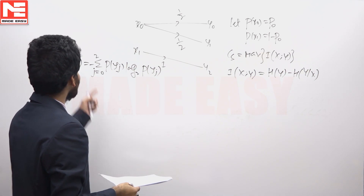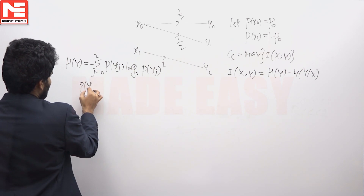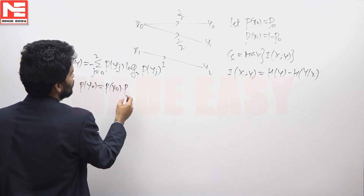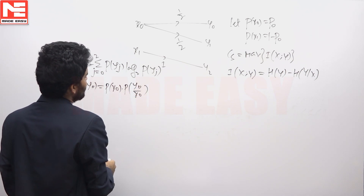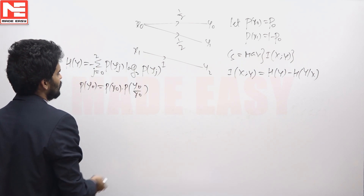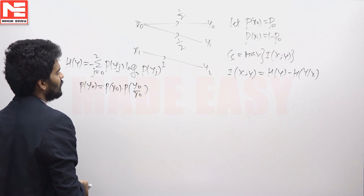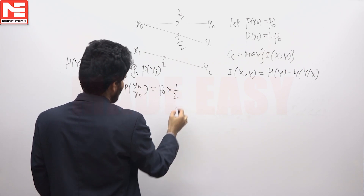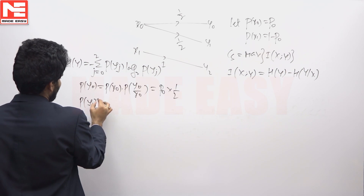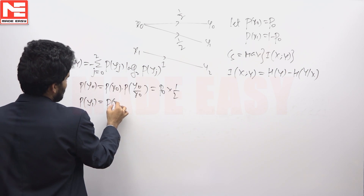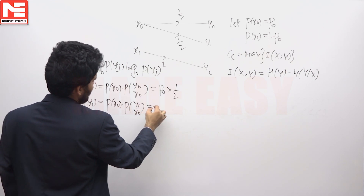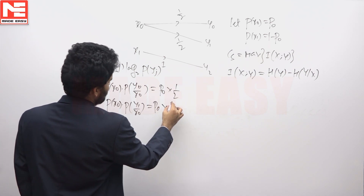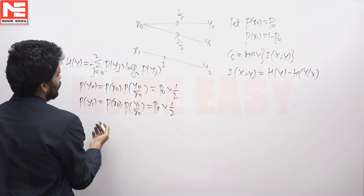P(Y0) equals P(X0) times P(Y0|X0). There is no chance of X1 being received as Y0, so only X0 has the possibility of being received as Y0. So it is P0 times P(Y0|X0), which is 1/2. Similarly, P(Y1) equals P(X0) times P(Y1|X0), and P(Y0|X0) = 1/2.